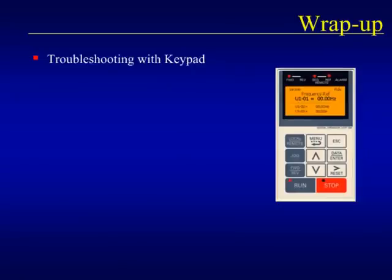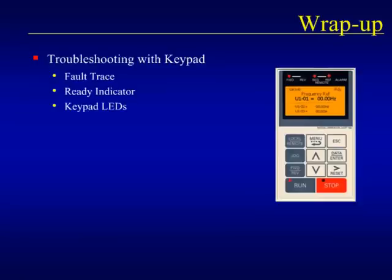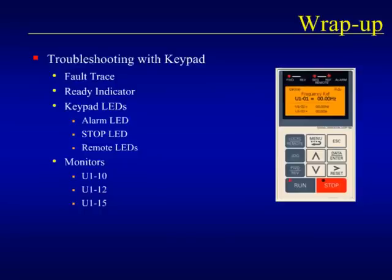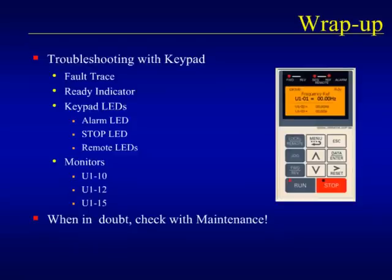Let's wrap up and review what we have covered. We found that we can use the keypad of the F7, P7, or G7 drives to help troubleshoot drive operation even without electrical knowledge. The drives have a fault trace function that tells us what was happening at the moment of the most recent fault. For a run to start the drive, the ready indication must be seen in the upper right-hand corner of the keypad display. We checked out the keypad LEDs and how they show information about faults, local/remote control, and lacking a speed command. Finally, we reviewed valuable monitors that can help diagnose drive problems. The purpose of this module was to arm the typical machine operator with tips that may save downtime, but the final review of any real operational problems should still be in the hands of the electrician or maintenance person.